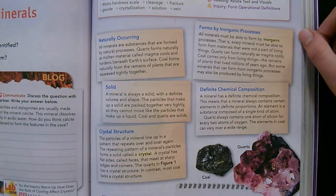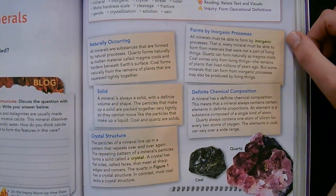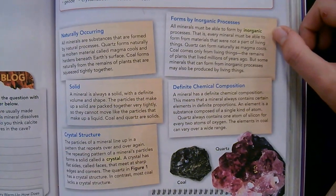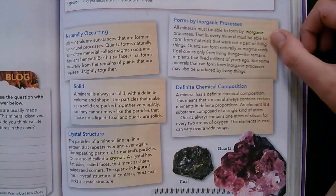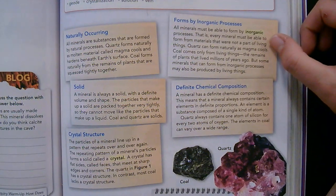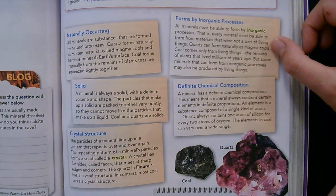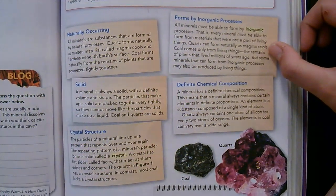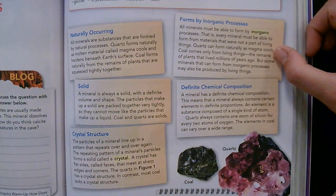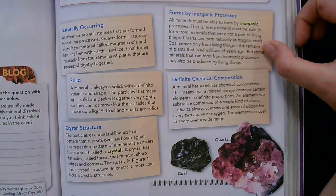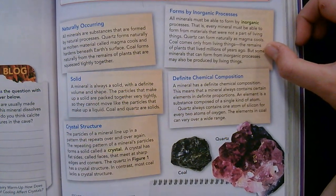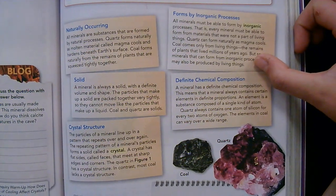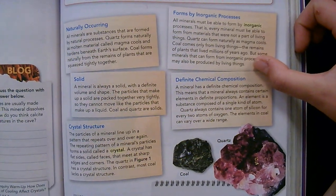Forms by inorganic processes. All minerals must be able to form by inorganic processes — that is, every mineral must be able to form from materials that were not a part of living things. Quartz can form naturally as magma cools. Coal comes only from living things, the remains of plants that lived millions of years ago. But some minerals that can form from inorganic processes may also be produced by living things.